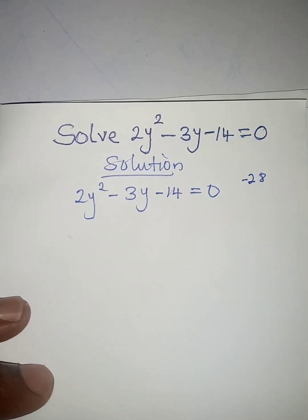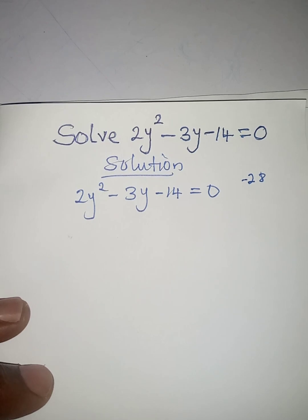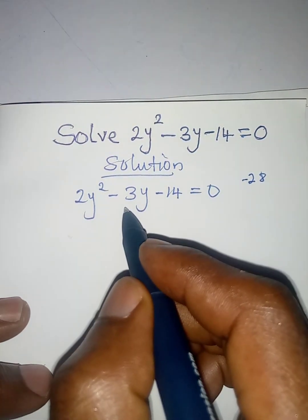is what two numbers do you multiply to have minus 28, and then you will add the two numbers to have minus 3?